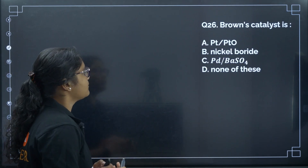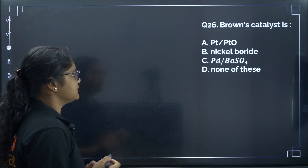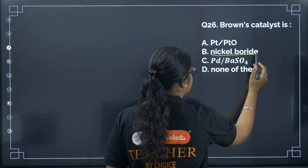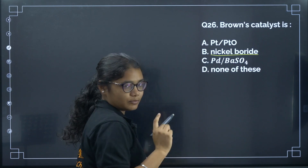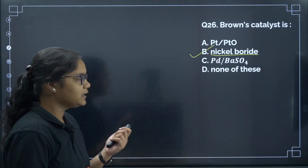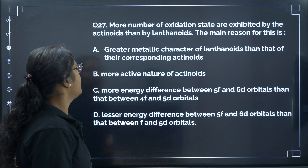Question 26: Nickel boride is called the brown catalyst. The correct answer is option B.